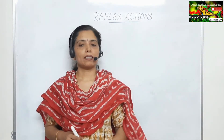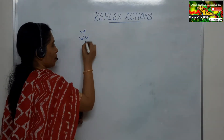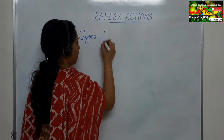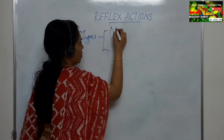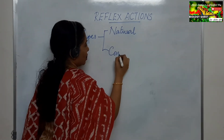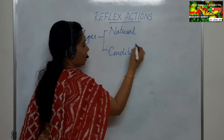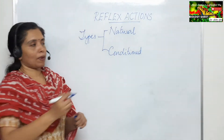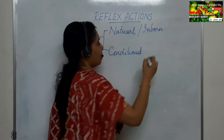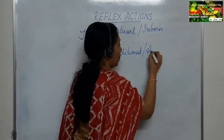Now let us move on to the types of reflexes. There are two types of reflex actions: the first is the natural reflex, and the second is the conditioned reflex. Natural reflex is otherwise called as inborn reflex, whereas conditioned reflex is also called as acquired reflex.